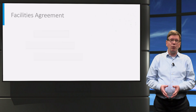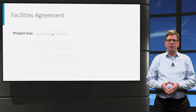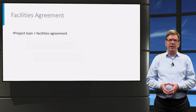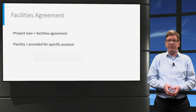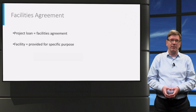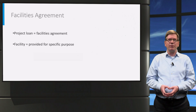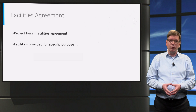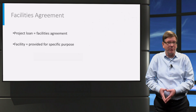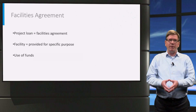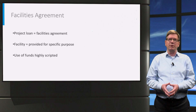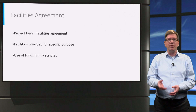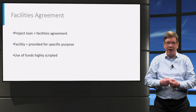The project loan is called a facilities agreement, which may seem like a strange name in this context. A facility is normally the name we give for a place that is provided for a specific purpose. The name here signals that the project loan facility can only be used for a very specific purpose. The use of the borrowed funds is highly scripted. The funds you borrow need to be defined in other project documents — we call that utilizing or drawing down the loan.